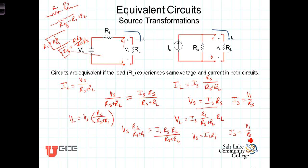The takeaway is that we can replace a voltage source and a series resistance with a current source and a parallel resistance, where the resistance values are the same and the relationship between V_S and I_S is V_S equals I_S times R_S. In the next video, we'll show how this can be used to simplify more complicated circuits into less complicated circuits to facilitate circuit analysis.